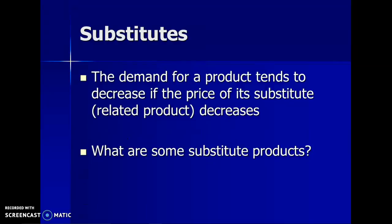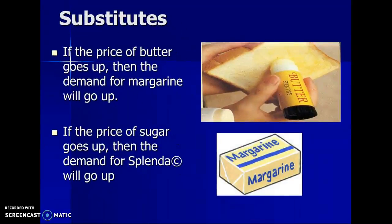The reverse of a complement is a substitute. Demand for a product tends to decrease if the price of a substitute decreases. For example, butter and margarine are basically the same thing. If the price of butter goes up, demand for butter goes down, and demand for margarine — the substitute — goes up. Similarly, if the price of sugar goes up, the demand for Splenda, an artificial sweetener substitute, will go up.